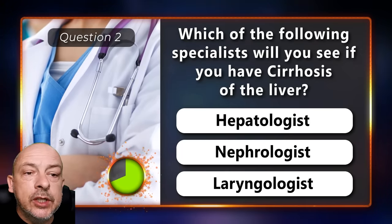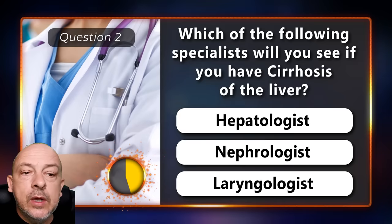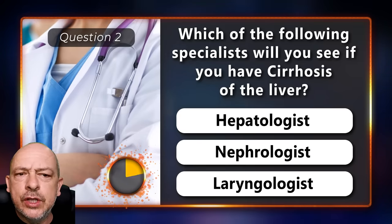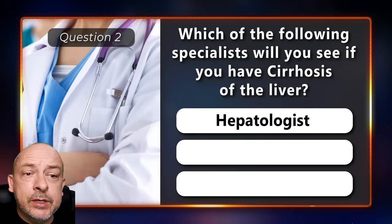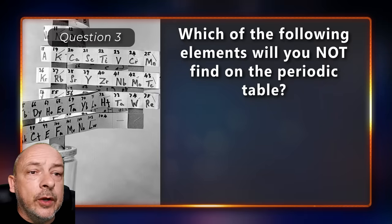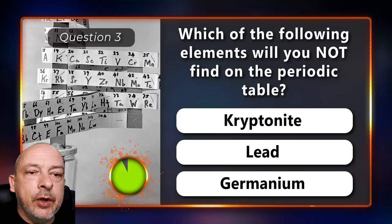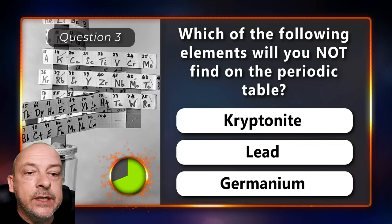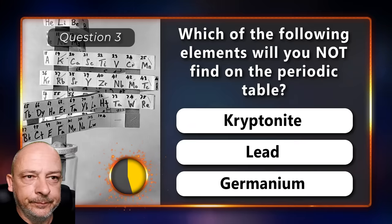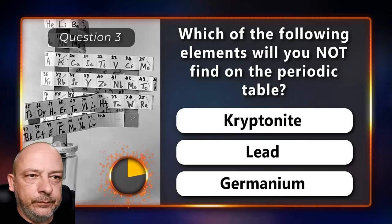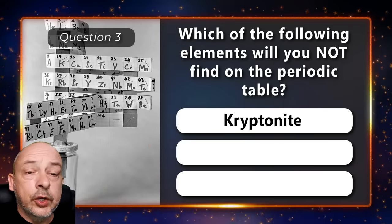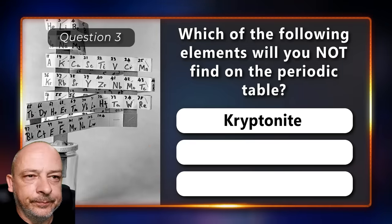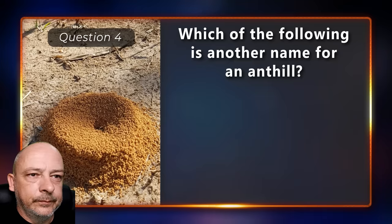Which specialist will you see if you have cirrhosis of the liver — a hepatologist, a nephrologist, or a laryngologist? The answer is a hepatologist. Which of the following elements will you not find on the periodic table — kryptonite, lead, or germanium? Kryptonite.